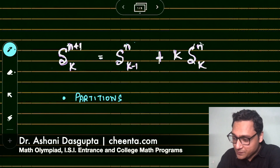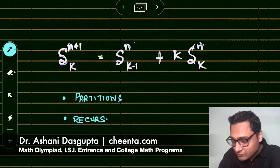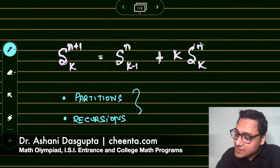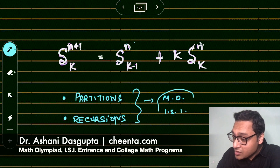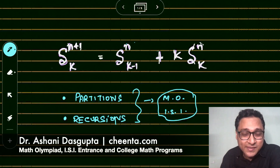The second thing we will learn is about recursions, which is a very powerful tool in combinatorics. Both of these are discussed in the Math Olympiad and the ISI entrance program at Chinta. You should definitely look into the link in the description for chinta.com — it's a very interesting space for mathematicians for learning mathematics.